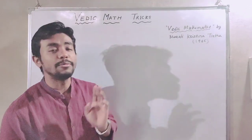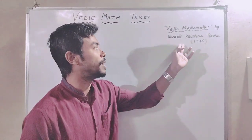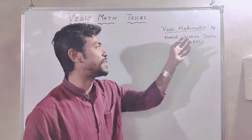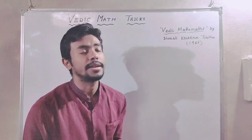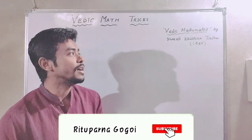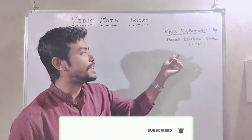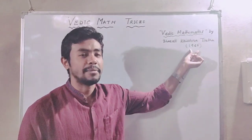Vedic Mathematics is a book — Vedic Mathematics by Bharati Krishna Tirtha. This is an Indian writer. It was published in 1965.